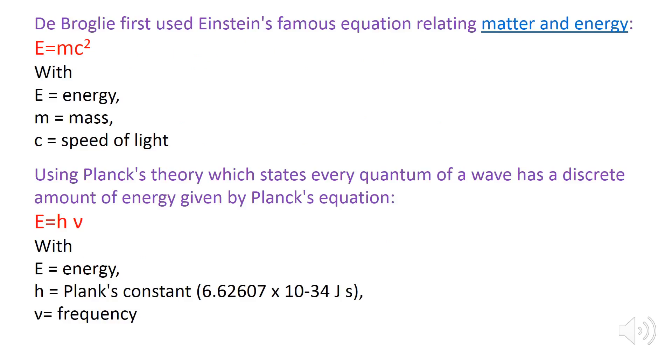De Broglie first used Einstein's famous equation relating matter and energy, that is, E equals mc squared, where E is energy, m is mass, and c is the speed of light.